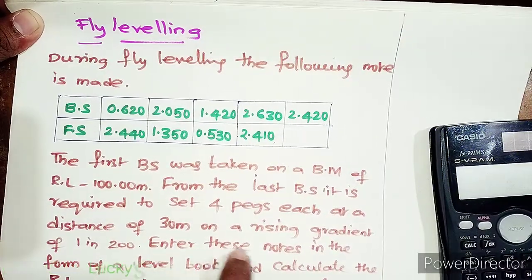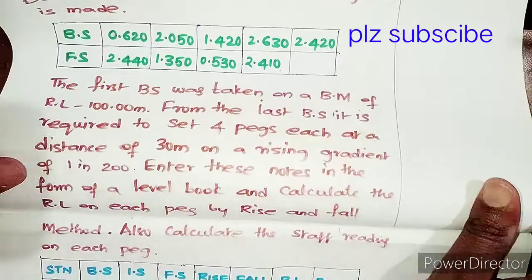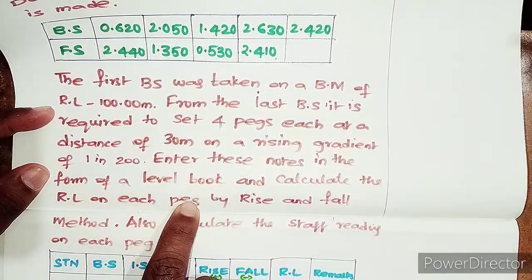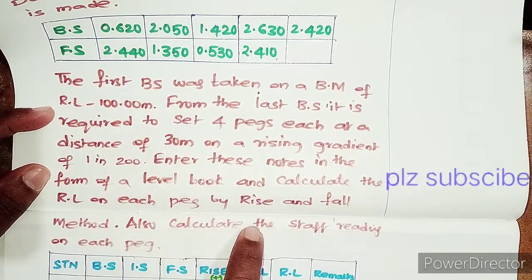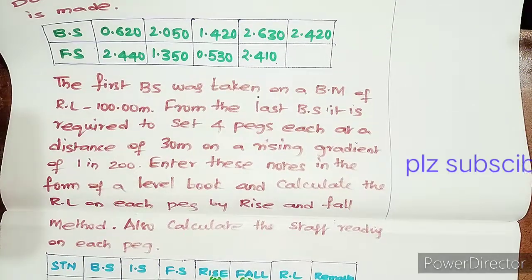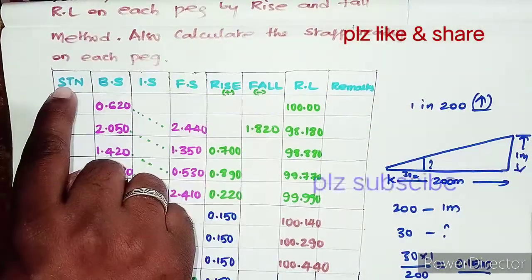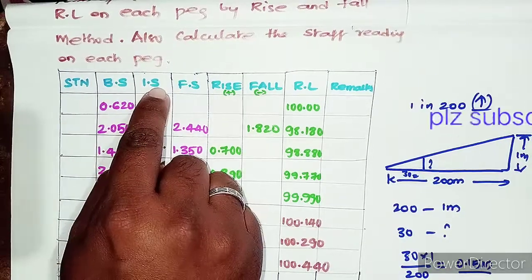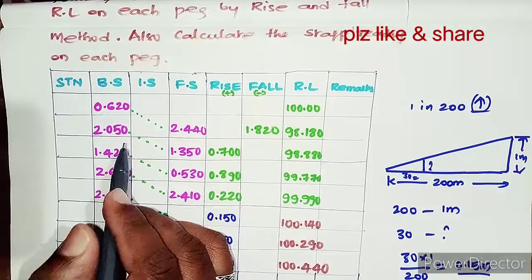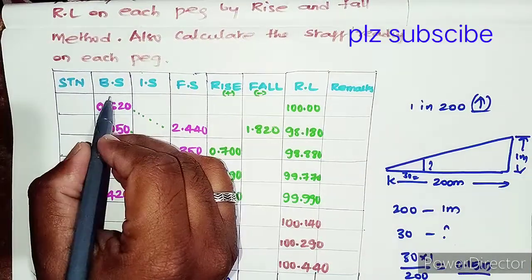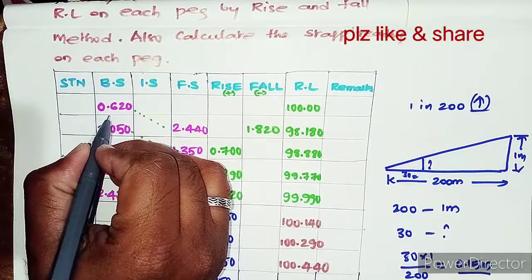We need to enter these notes in the form of a level book and calculate the RL on each peg by the Rise and Fall method, and also calculate the staff reading on each peg. The pro forma columns are: Station, Backsight, Intermediate, Foresight, Rise, Fall, RL, and Remarks.